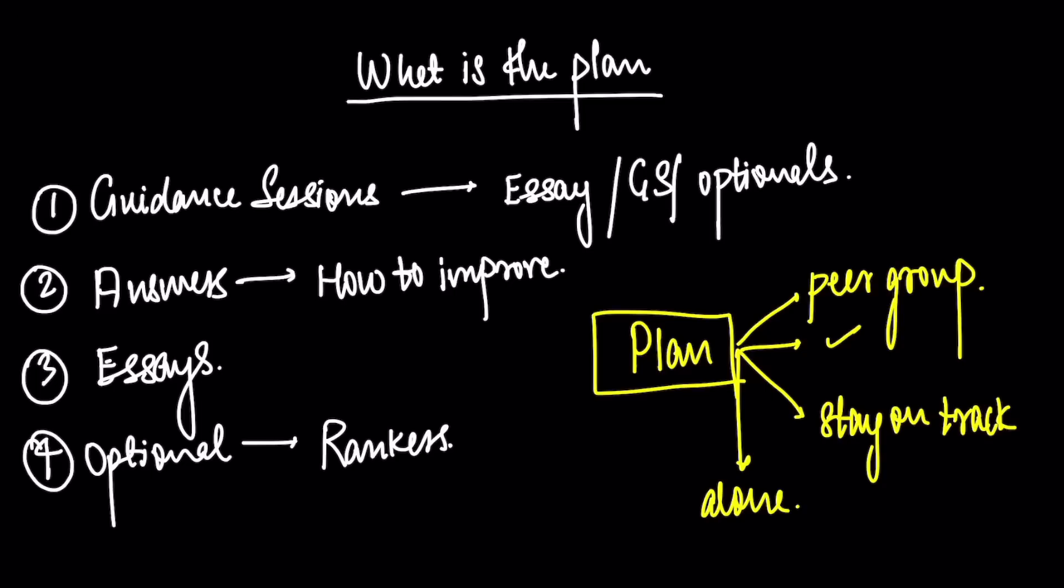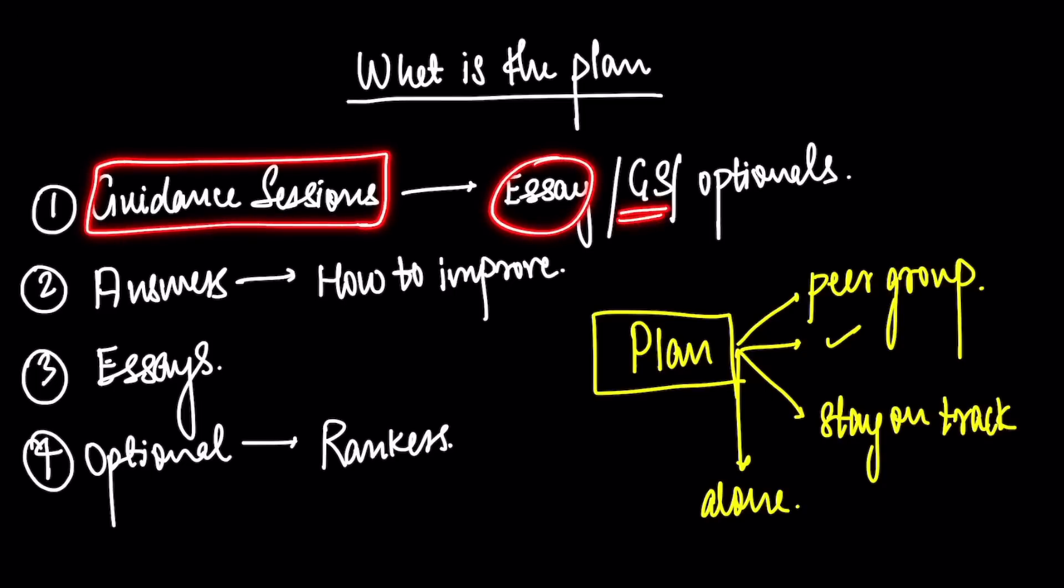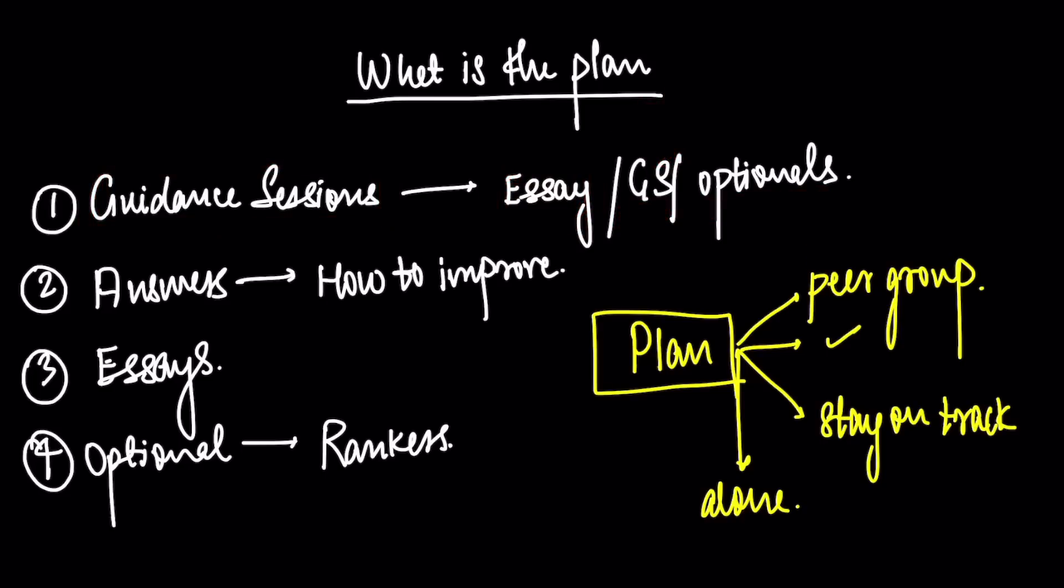Now, what is the plan? The plan is that firstly we will have guidance sessions for essay, for all general studies papers 1, 2, 3, 4, and specifically for your optional. And we will get people who have at least scored 250, 260 marks, preferably more. We will get people who have gotten very good marks to help you and tell you how they managed these three months. It's not possible to explain this in videos.